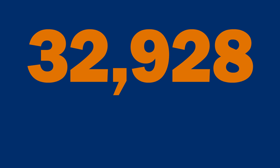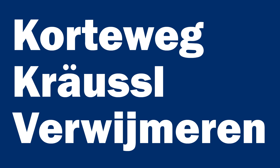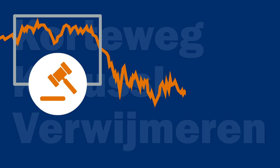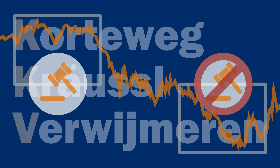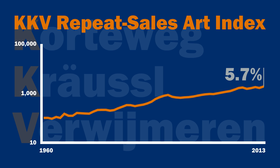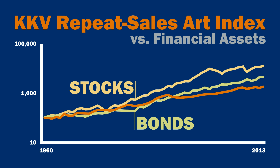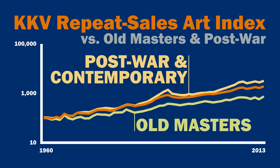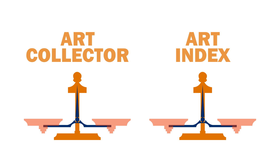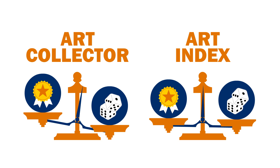Using annual resales of almost 33,000 unique paintings from 1960 to 2013, an academic study by Korteweg, Krausel, and Verremeren created a Repeat Sales Index of Art. They also account for the fact that in bad markets, owners of art are less likely to sell at auction. This KKV index shows that the average return on art is 5.7% over that time period. While this rate of return is higher than inflation, it is lower than the average return on both stocks and bonds. They also show that when you calculate indexes separately for different types of art — such as old masters and post-war and contemporary art — the return and volatility characteristics for different types of art can be quite different. Because few art collectors have a portfolio diversified across styles, the reality of the risk and return they will experience through their investments might differ from the General Art Index substantially.